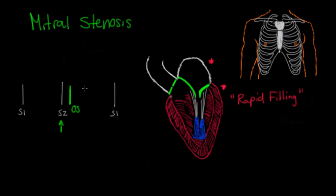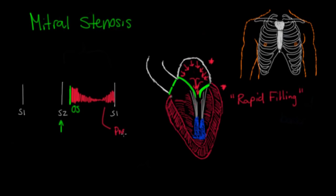Because the pressure difference is greatest during rapid filling, you have the highest intensity of the murmur right after the opening snap. Then it starts to slow down as pressures become more equal. At the end of diastole, the atrium gives a little contraction to push any leftover blood into the left ventricle, giving a small upslope — a little extra kick at the end. This is called presystolic accentuation. This murmur is heard in the mitral or apical area.